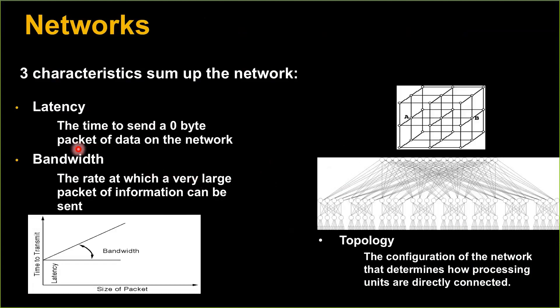The latency of a network is basically the time lag to send a very small message between any node and any other node — you can define it as a zero-byte message. If you've got a code that's sending lots of small messages, that latency might be the dominant factor that determines its performance. If the network has poor latency, it's going to spend a lot of time waiting for these little messages to come across. On the other hand, if you've got a code that sends messages with a lot of data in each one, you're more concerned about the bandwidth — the speed in megabytes per second or gigabytes per second.